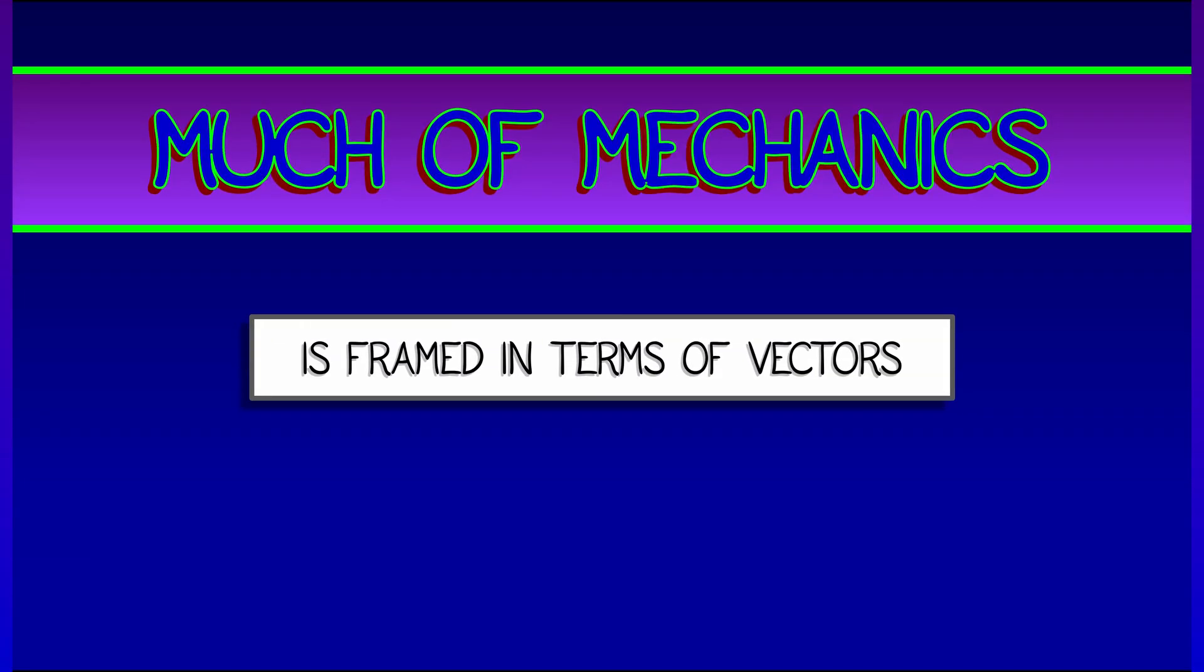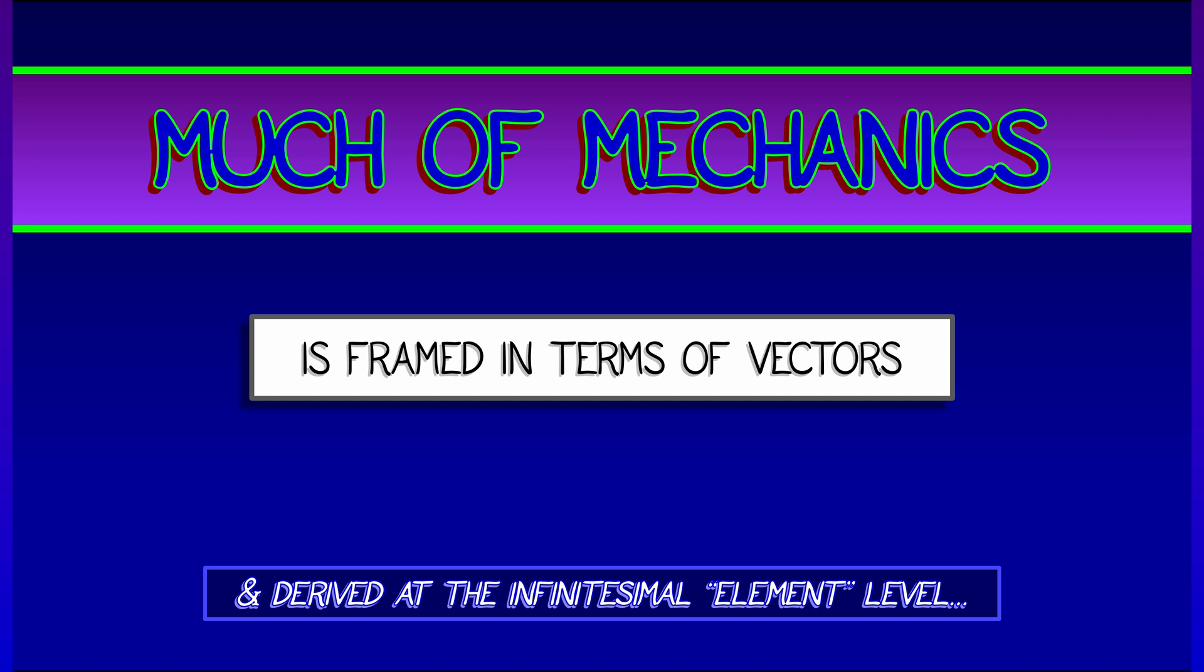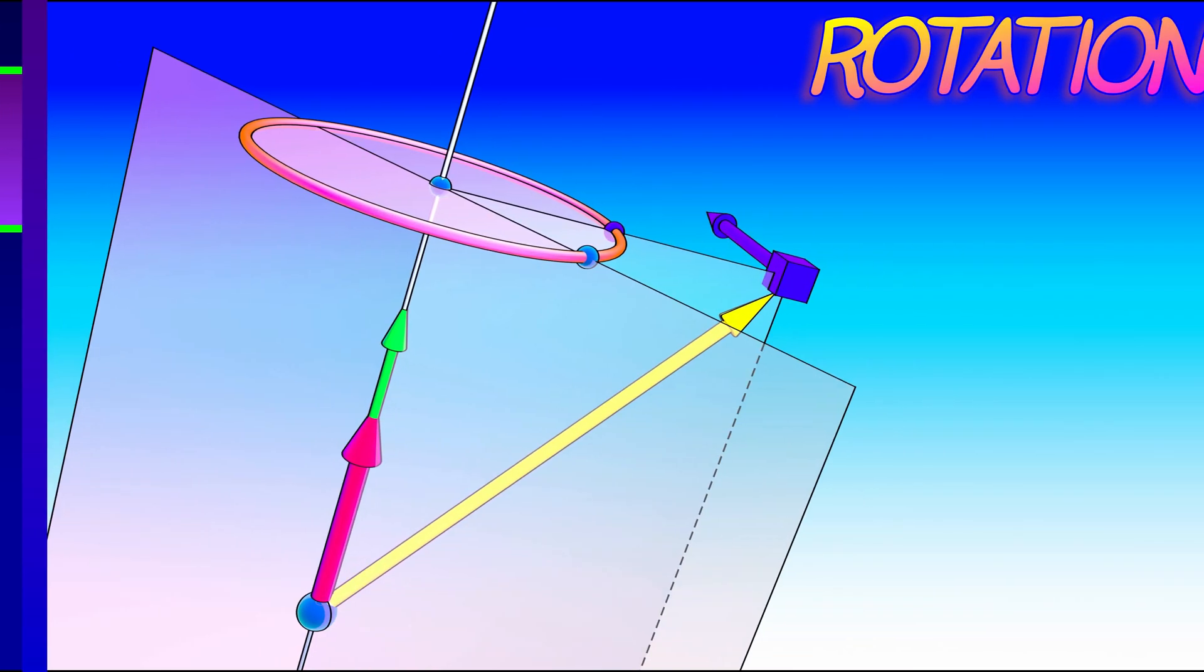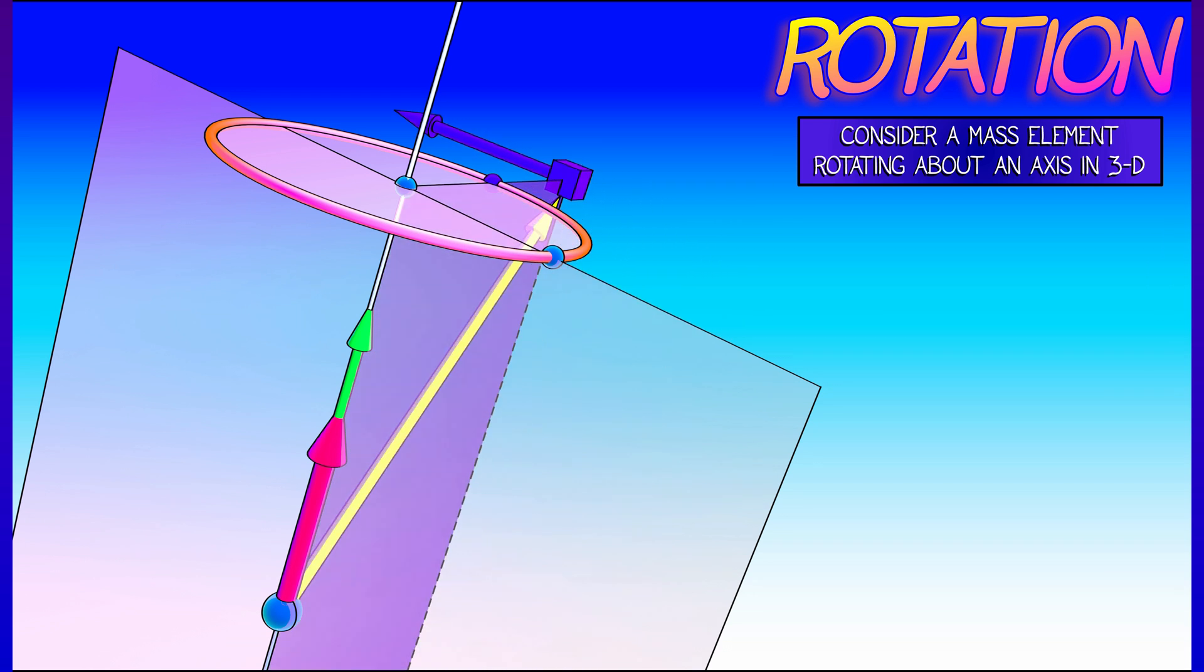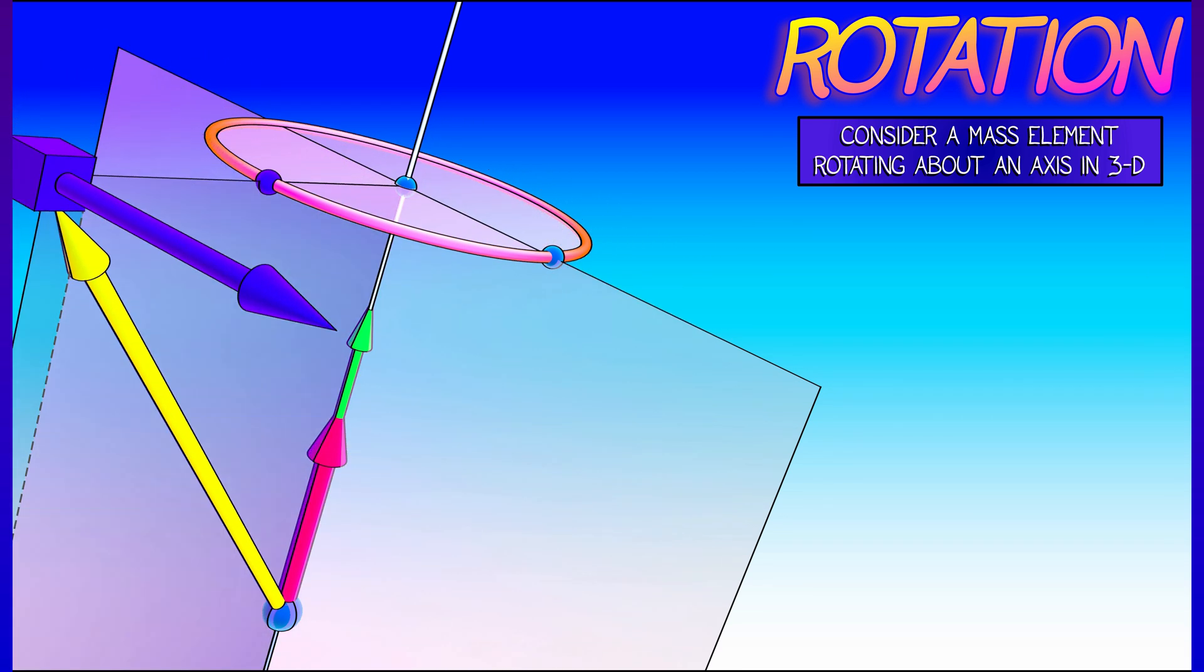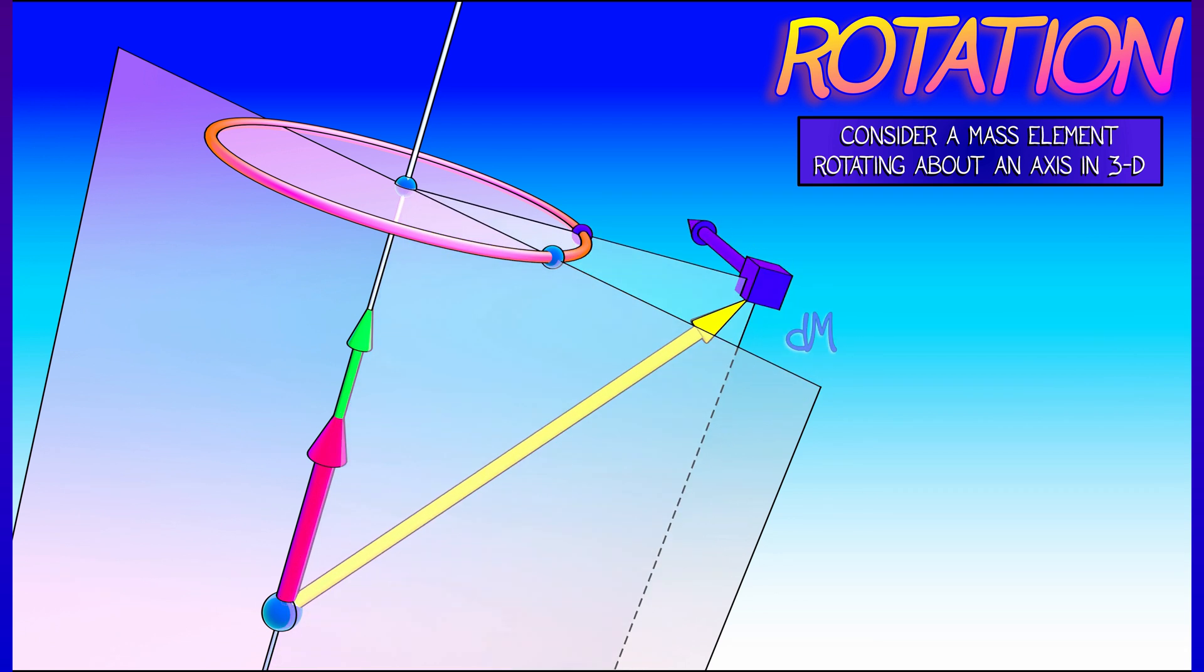We're going to frame a lot of this in terms of vectors, and we're going to work at the infinitesimal or element level in terms of deriving some features and properties. Let's say that we've got a mass element that is rotating about an axis in 3D. I'm going to fix that axis.